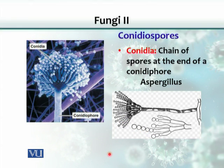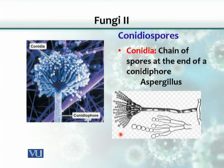One important thing to note is that fungi — especially filamentous fungi — are identified by their morphology. The arrangement of spores is very important morphologically. Various fungi have a specific shape and arrangement of spores by which we can identify them, so please keep that in mind.